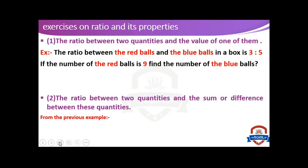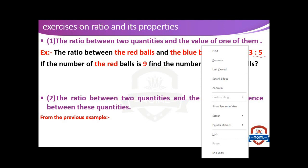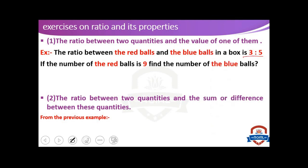The first type of exercises. Look at this exercise. The ratio between the red balls and the blue balls in a box is 3 to 5. If the number of the red balls is 9, the ratio between the red balls is 3 to 5 and the number of the red balls is 9. We will denote the unknown number by x. To find x,